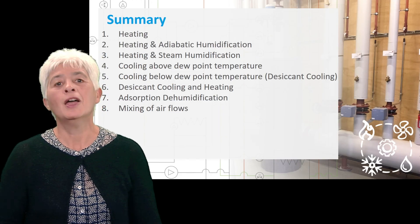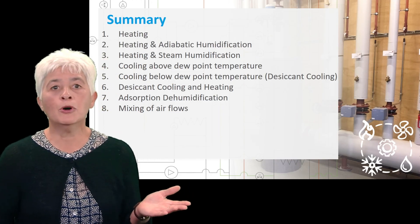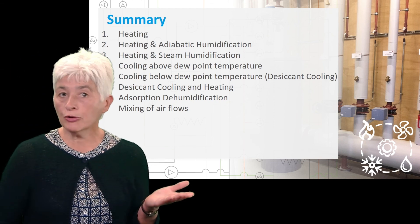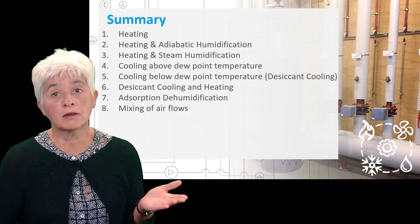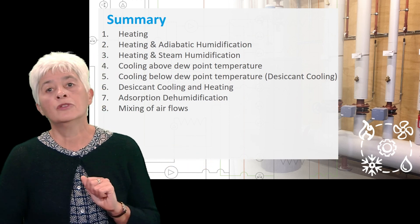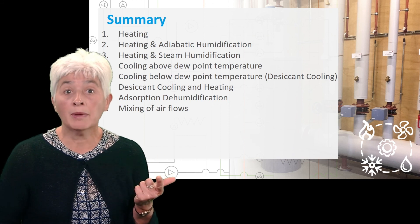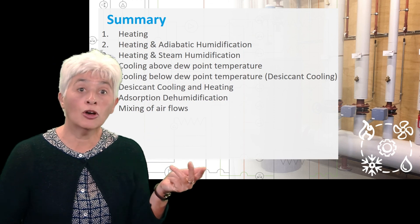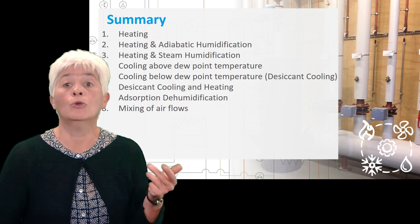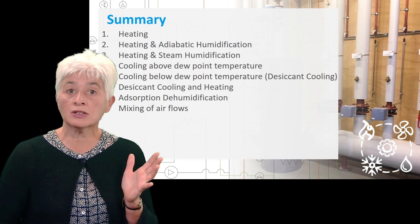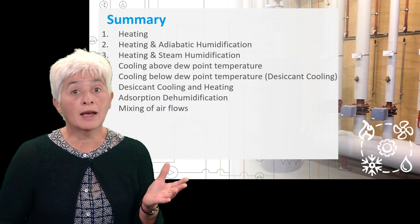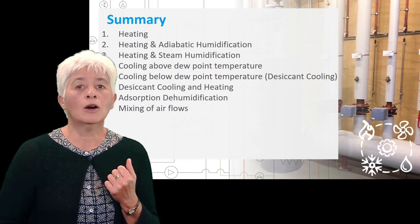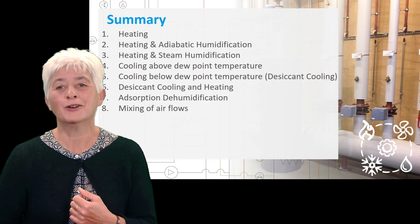To summarize this lecture, we have learned about the most important processes to bring air to desired conditions, and you are now able to draw these processes in the Mollier diagram or a psychrometry chart. These processes are: heating; heating and adiabatic humidification; heating and steam humidification; cooling above dew point temperature; cooling below dew point temperature (also called desiccant cooling); desiccant cooling and heating; adsorption dehumidification; and mixing of air flows. Thank you for your attention. Goodbye!